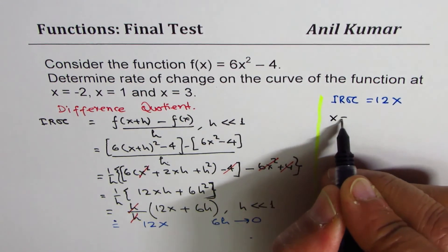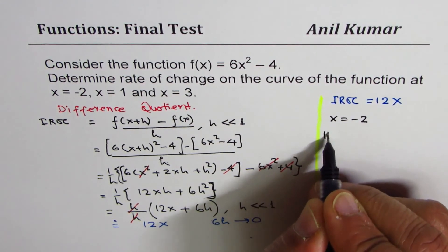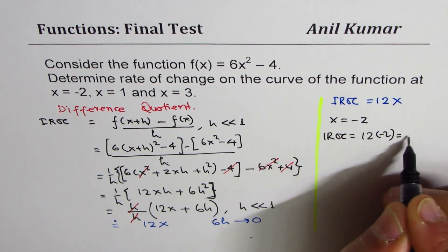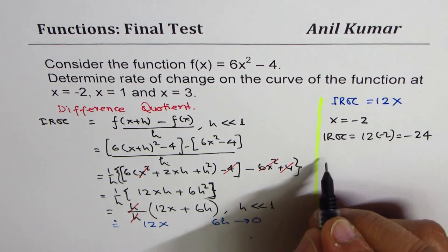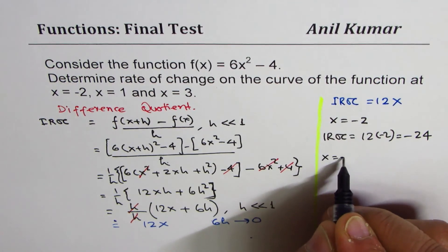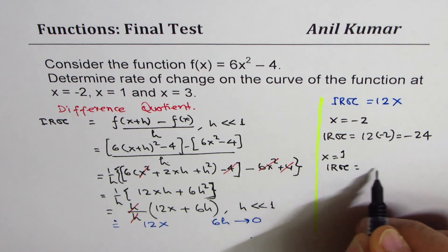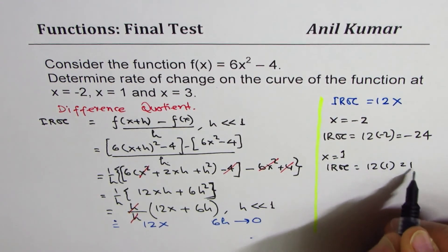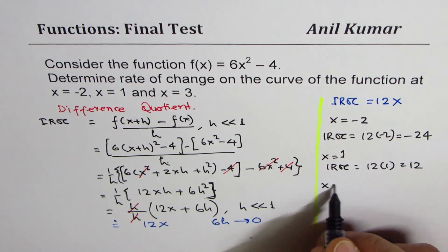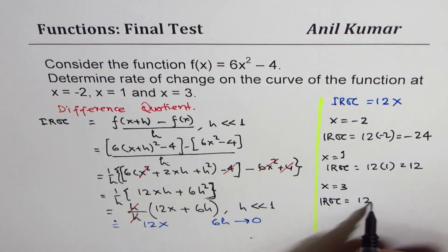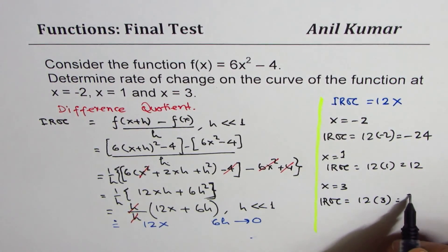So at x = -2, instantaneous rate of change equals 12(-2), which is -24. At x = 1, instantaneous rate of change will be equal to 12(1), which is 12. And at x = 3, instantaneous rate of change will be 12(3), which is 36.